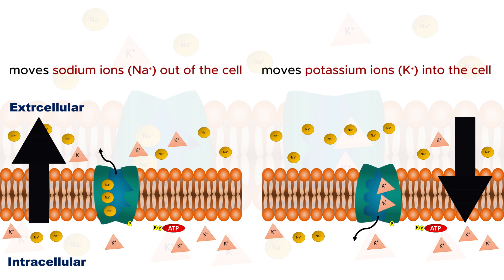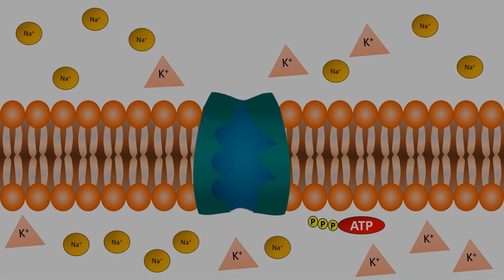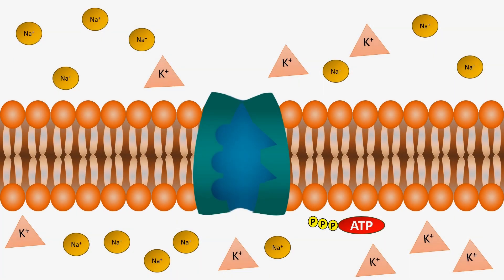The sodium-potassium pump is vital for processes like nerve impulse transmission and muscle contractions. The pump operates in a cycle. First, three sodium ions inside the cell bind to the pump.